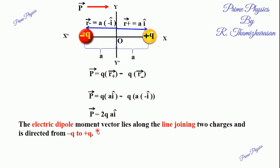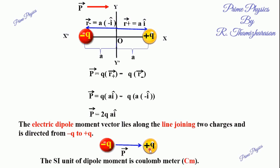The direction of the dipole moment is from negative to positive. The unit of charge is Coulomb (C) and the unit of distance is meter (m), so the unit of dipole moment is Coulomb-meter — that is capital C into small m. Be careful: this is not centimeter (small cm) but Coulomb·meter (C·m).